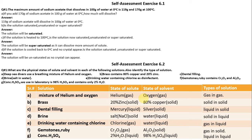For salt in water: sodium chloride (NaCl) is in solid form as the solute, water is the solvent in the form of liquid — solid in liquid. Drinking water containing chlorine: chlorine is the solute in the form of gas, water is the solvent in the form of liquid — gas in liquid.